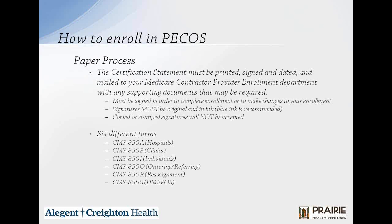Blue ink is highly recommended because they will not accept copied or stamped signatures, and if they suspect they are, they will reject your application. In the paper process, there are six different forms: CMS-855A for hospitals, CMS-855B for clinics, CMS-855I for individuals, CMS-855O for ordering or referring providers (those who don't see patients directly but review charts or orders), CMS-855R for reassignment, and CMS-855S for DME.